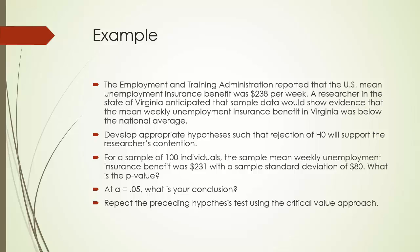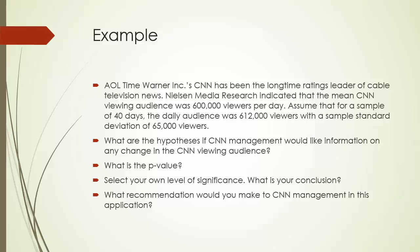Here are two examples of hypothesis testing for a population mean when sigma is unknown. In the first example, it is a lower-tailed test. In the second example, it is a two-tailed test. Please complete both examples on your own.